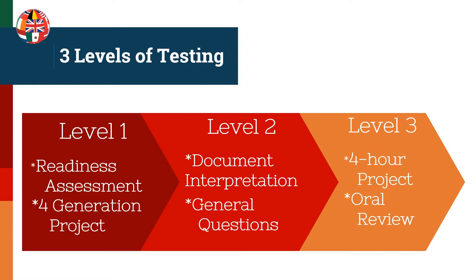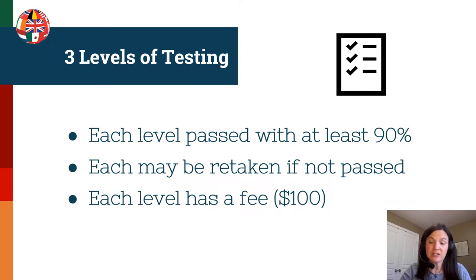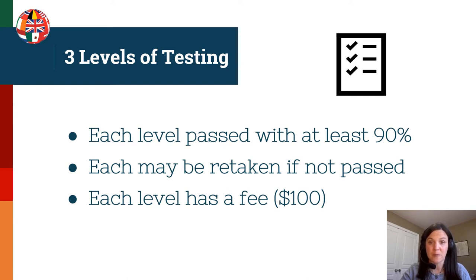There are three different levels in the testing process, each with two sections. Level one is the readiness assessment and a four-generation project. Level two includes two exams: one on document interpretation and one on general genealogy questions. Level three consists of a four-hour research project and an oral review with a board of experts. Each level must be passed at 90% proficiency. If you don't pass a portion, you just redo that portion — once the entire level is passed at 90%, you move on.